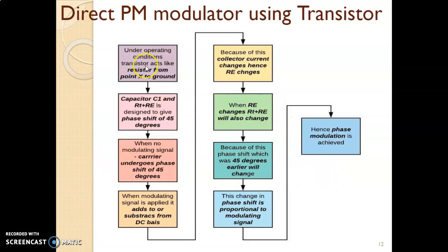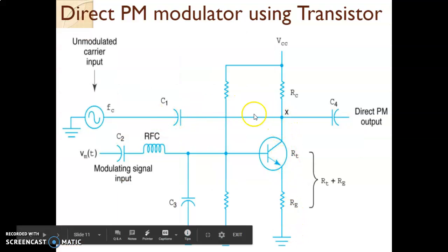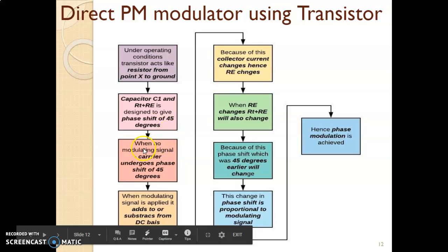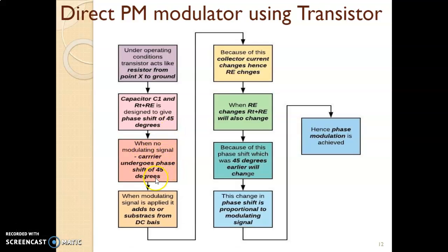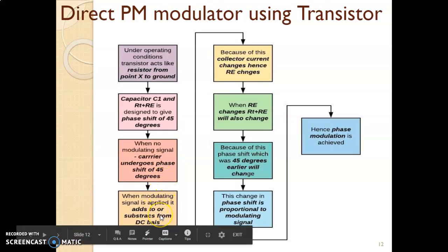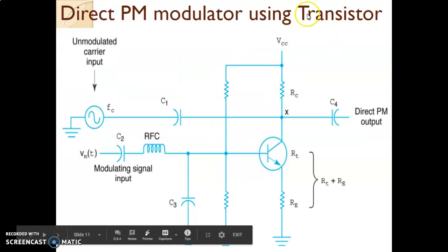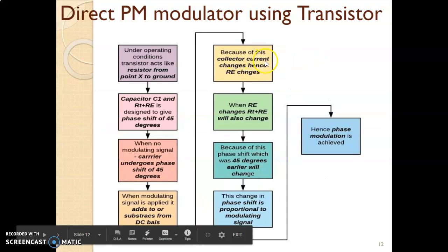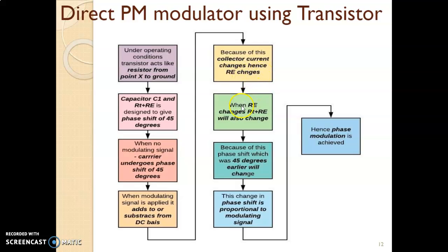Under the operating condition, when the transistor acts like a resistor from point X to ground, capacitor C1 and RT plus RE — that is this particular branch — are designed to produce a phase shift of 45 degrees. When no modulating signal is applied, the carrier undergoes a phase shift of 45 degrees. But when the modulating signal is applied, it is going to add or subtract to the DC bias, that is VCC, and because of that the collector current changes, RE changes, and RT plus RE will also change. Because of this, the phase shift which was 45 degrees earlier is also going to change.